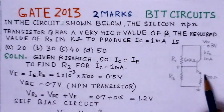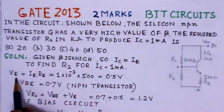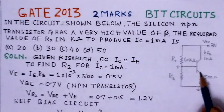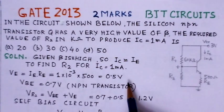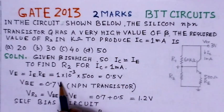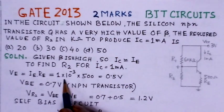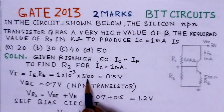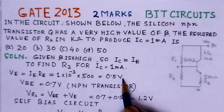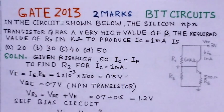Now, we can see that VE, the voltage drop across RE would be IE into RE, the current flowing and the resistance RE. We know the current flowing is 1 milliampere and RE value is 500 ohms. So, the value for VE comes out to be 0.5 volts.